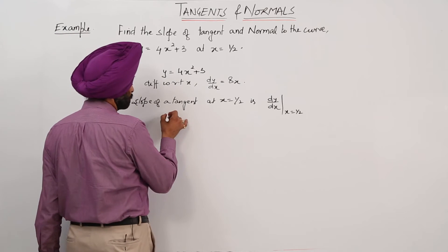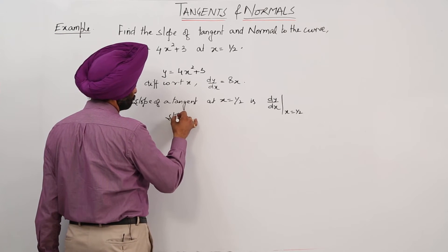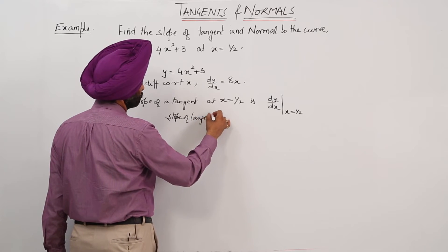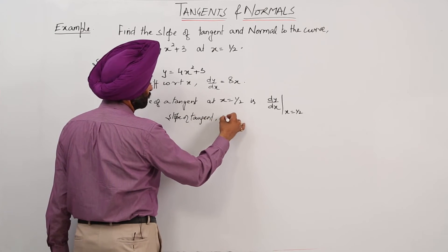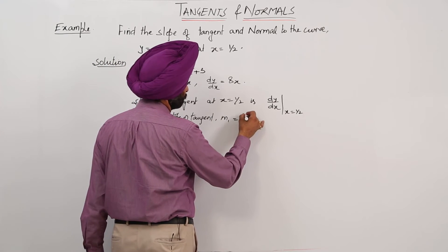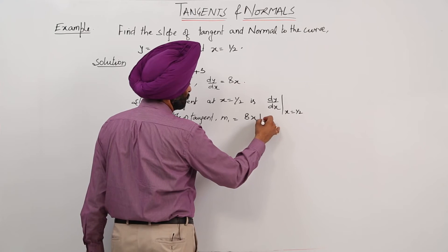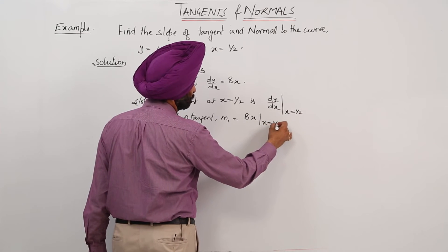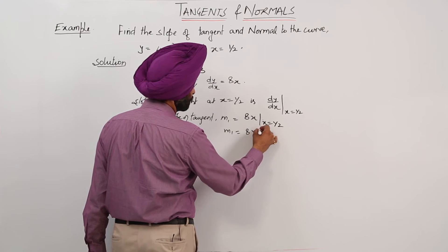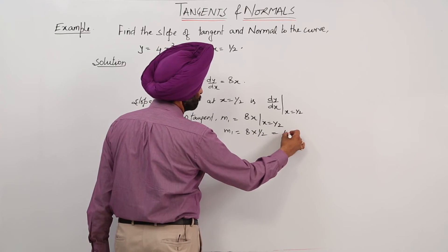So slope of tangent, say m1, equals 8x when x equals 1/2, or m1 equals 8 times 1/2 equals 4.